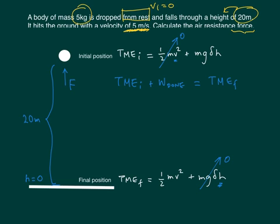Now the initial mechanical energy is just simply gravitational potential, so that's mg∆h because the kinetic energy is zero, plus the amount of work done which is the force times 20 meters in this case, should equal to the total mechanical energy finally which is just kinetic.